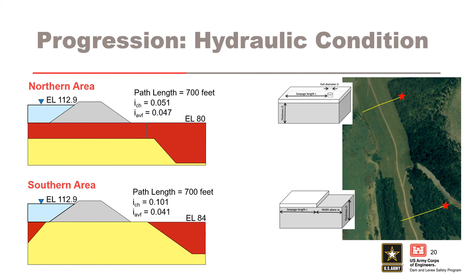Absent any flood fighting efforts, the average foundation gradient in the northern area is 0.047, which is approaching the critical gradient of 0.051 based on the adapted Schmertmann method. In the southern area, the average foundation gradient of 0.041 is well below the critical gradient of 0.101, again based on the adapted Schmertmann method.